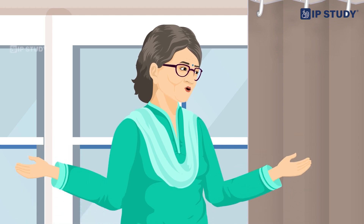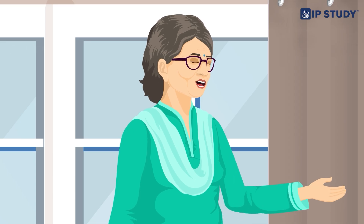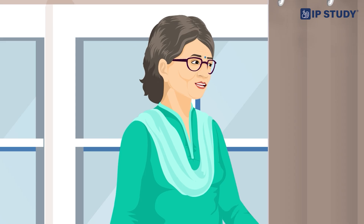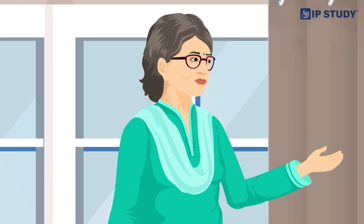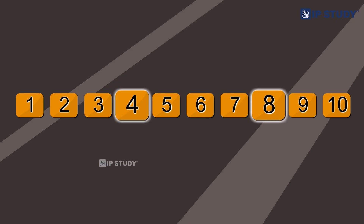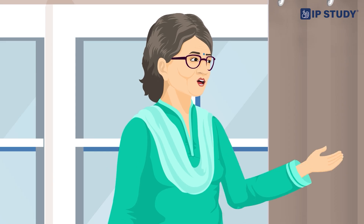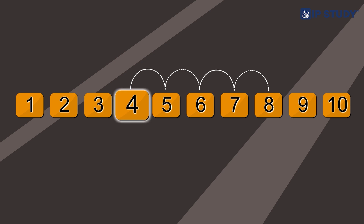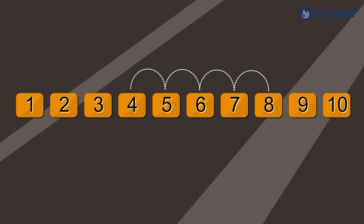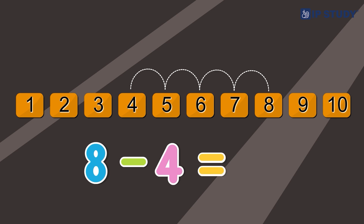Grandma introduces back counting and the number strip. She explains that when subtracting, you always start with the bigger number. Using 8 minus 4 as an example, she starts at 8 on the number strip and counts backward 4 boxes: 8, 7, 6, 5, 4 — landing on 4. So 8 minus 4 equals 4. Urvashi thinks it's cool and says it's like a game.